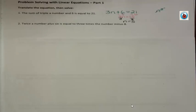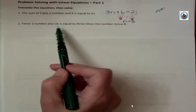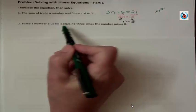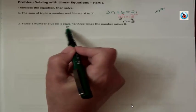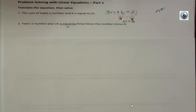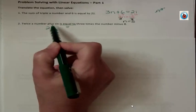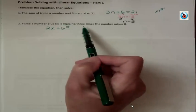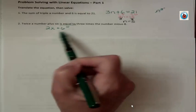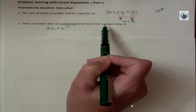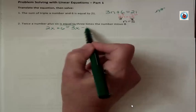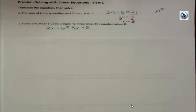Do you see right here where this one says twice a number plus 6 is equal to 3 times the number minus 8? Is equal to, that's our equal sign. Everything to the left of that is on the left of our equal sign. Everything to the right is on the right. So what's on the left? Twice a number plus 6. Just like triple a number, twice a number is 2 times that. So I'm going to say that that's 2x plus 6 is equal to 3 times the number minus 8. We're talking about the number, so it's the same number. 3 times that number minus 8. There's my equation.